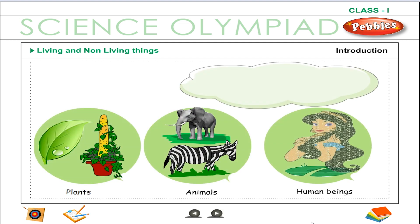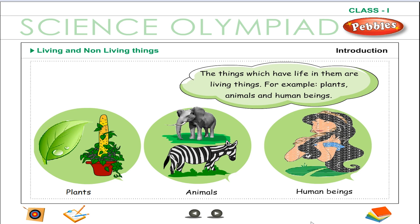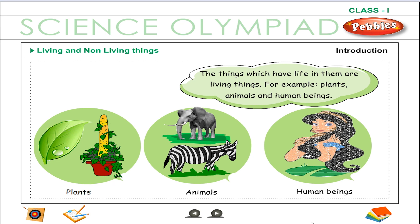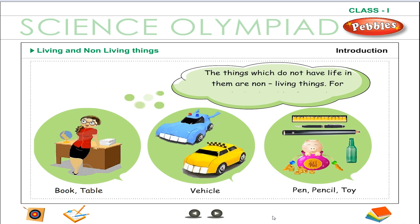The things which have life in them are called living things. For example, plants, animals and human beings. The things which do not have life in them are called non-living things. For example, book, table, fan, soil, etc.